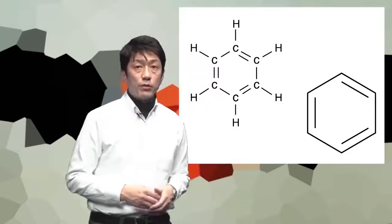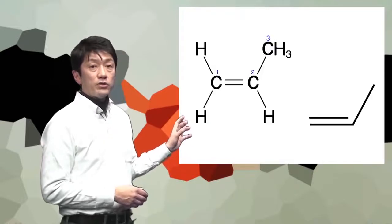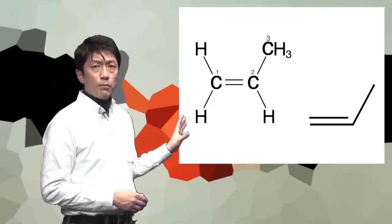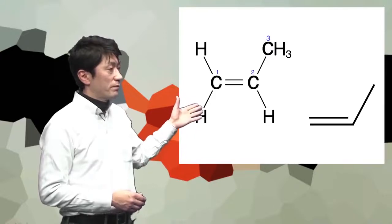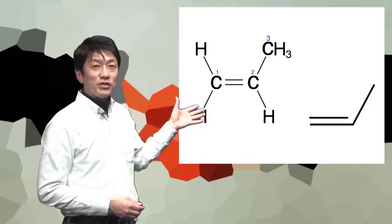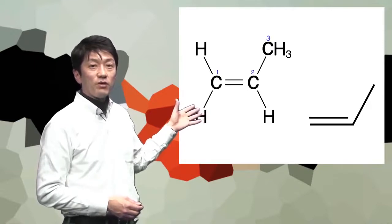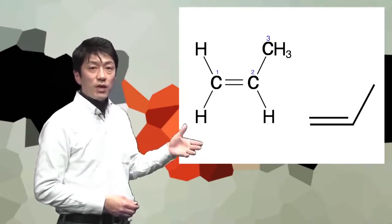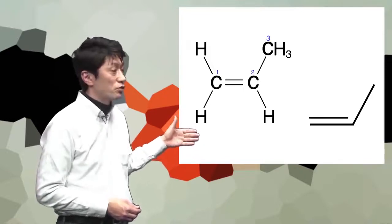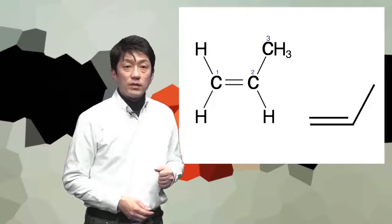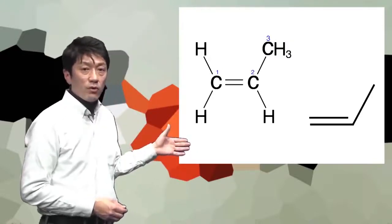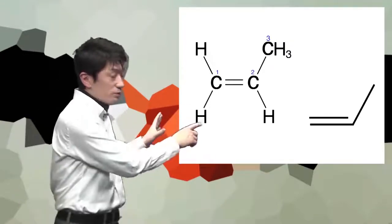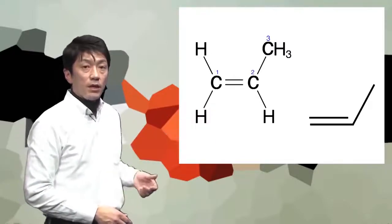Generally, we use polygonal lines instead of using carbon symbols. For example, we express propylene, which is used as a raw material for various chemical products. The carbon atoms are located at the corners, and the double line indicates a double bond between C1 and C2. Note that the hydrogen atoms attached to the carbon atoms are also omitted in this simplified expression.